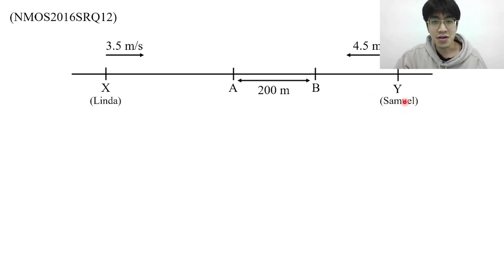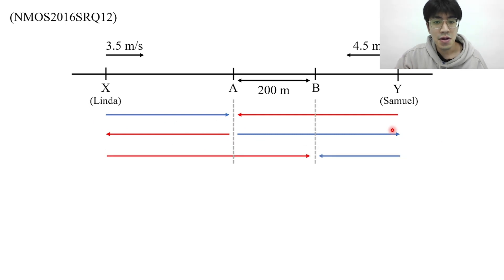Before you tackle any travel problem it is essential to first draw the journey. When they meet for the first time at point A, this would be the distance traveled by Linda and this will be the distance traveled by Samuel. After that they continue their journey toward X and Y so Samuel will travel this path and Linda will travel this path. Then they'll make a U-turn and meet each other again at point B. So this is how the journey looks like. Now how are we going to find the distances of all these journeys?